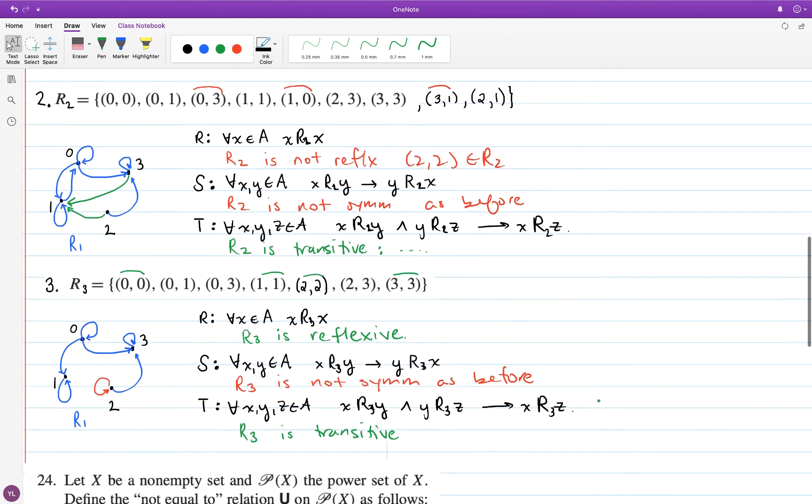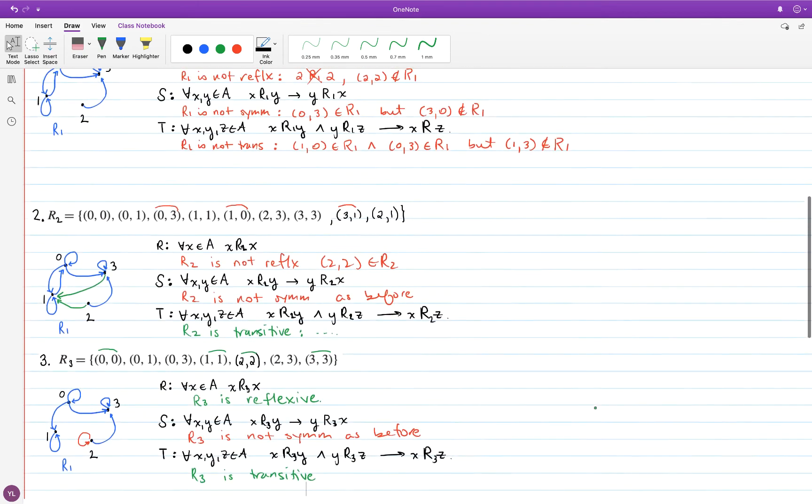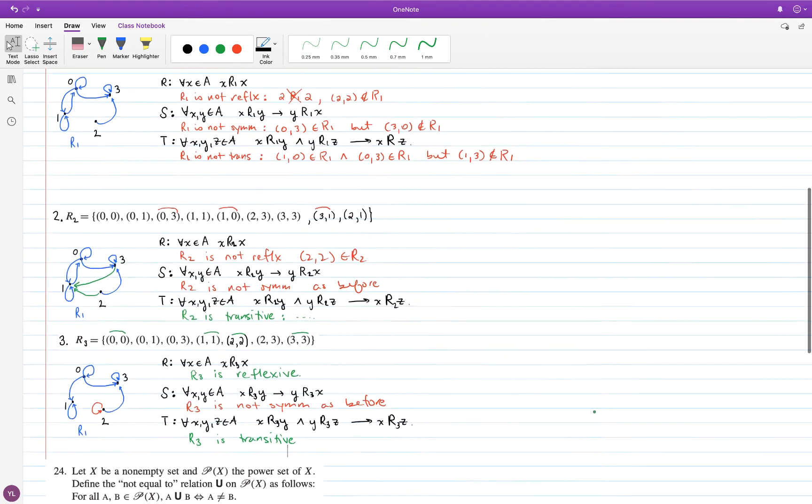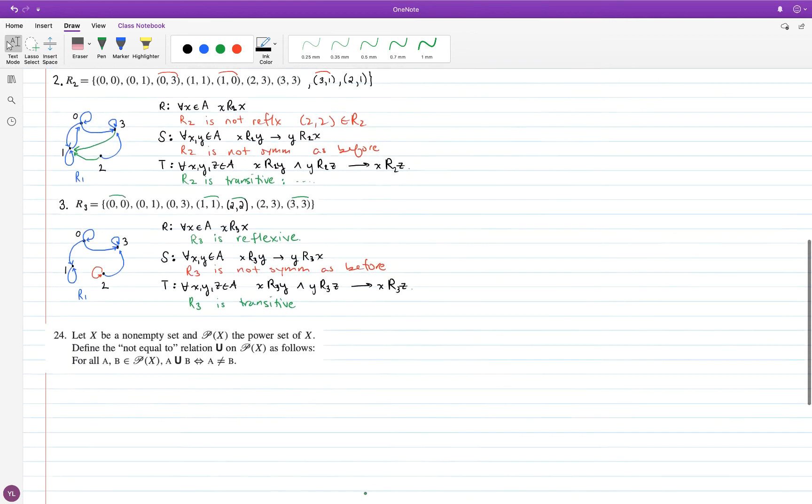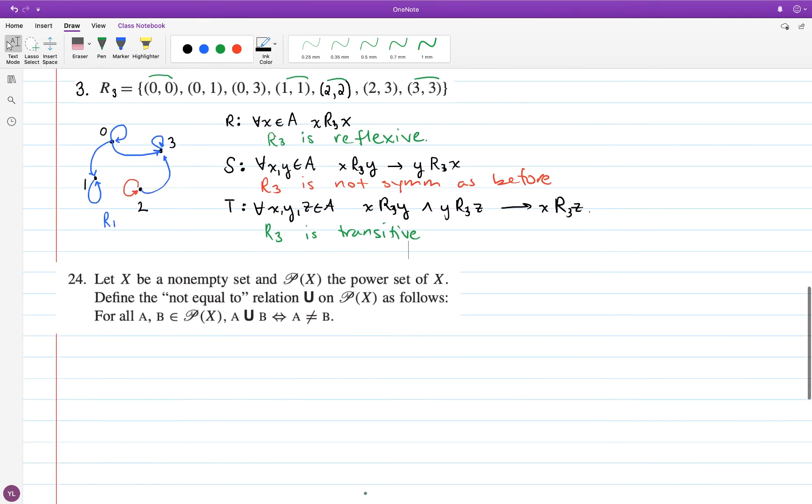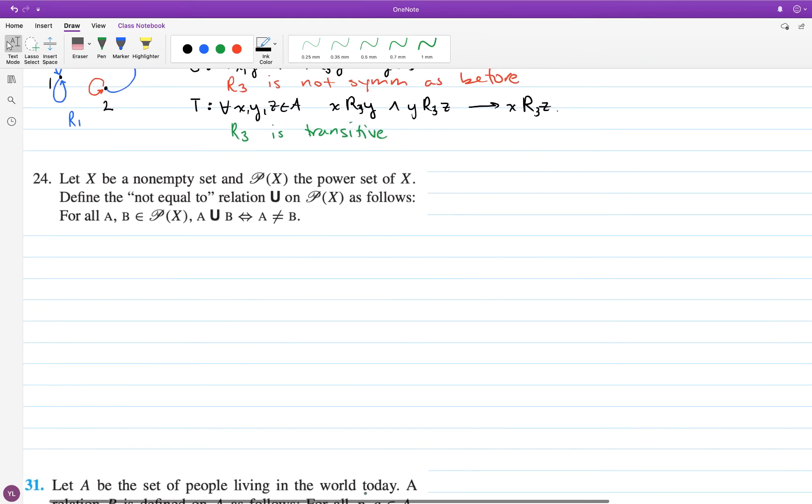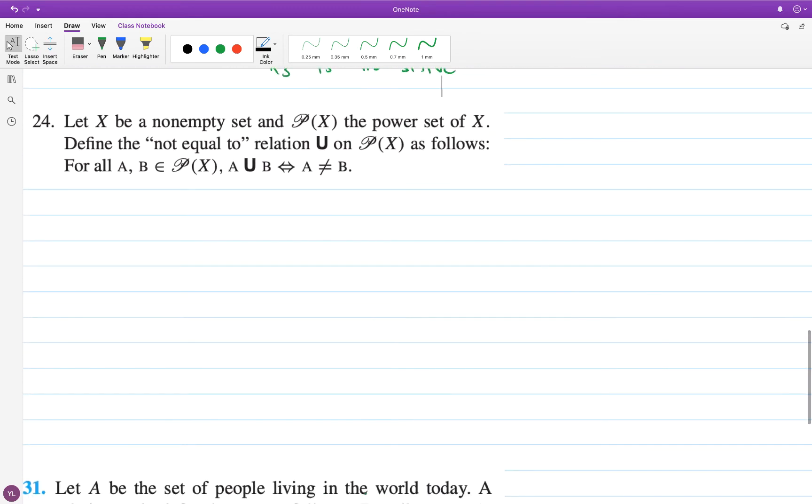So when your set A is small enough, these diagrams are useful in checking these three properties. We're not always going to have that situation, so we have to think about the properties logically. Let's go ahead and run through a couple more examples and just analyze these relations as to whether they're reflexive, symmetric, or transitive.